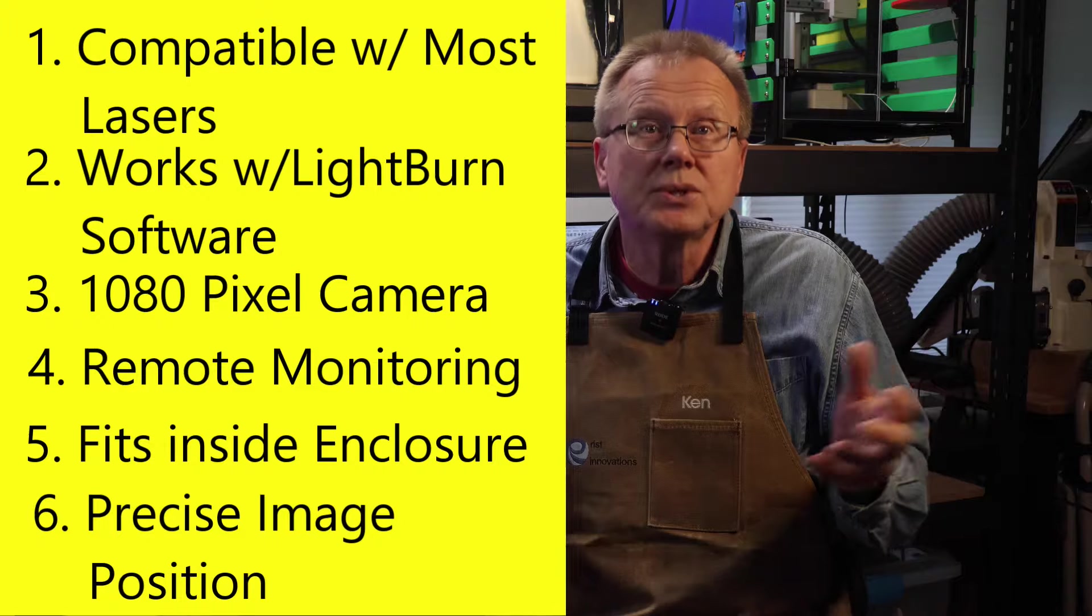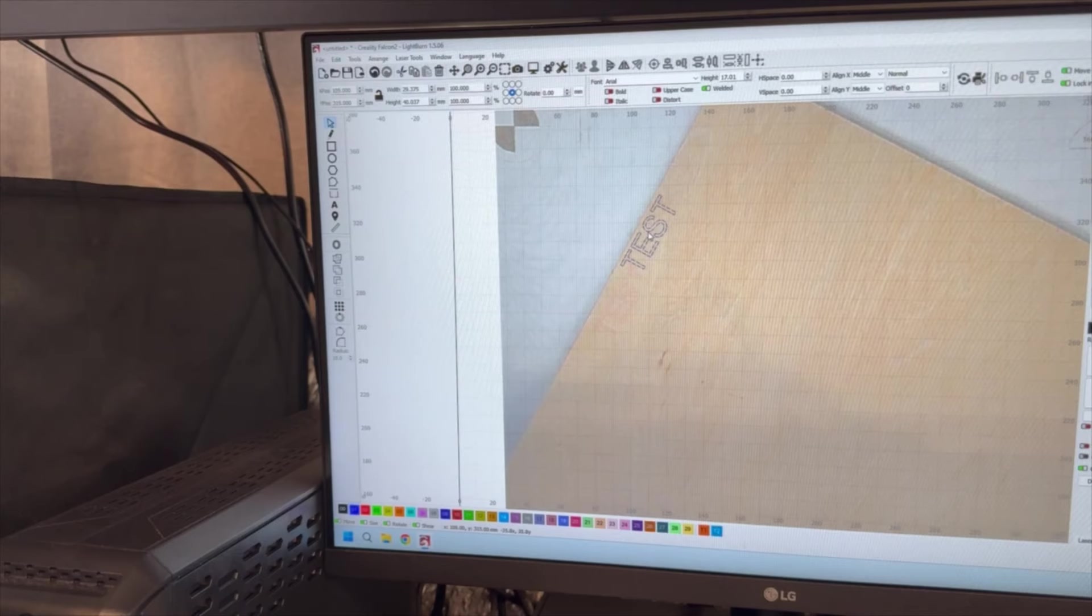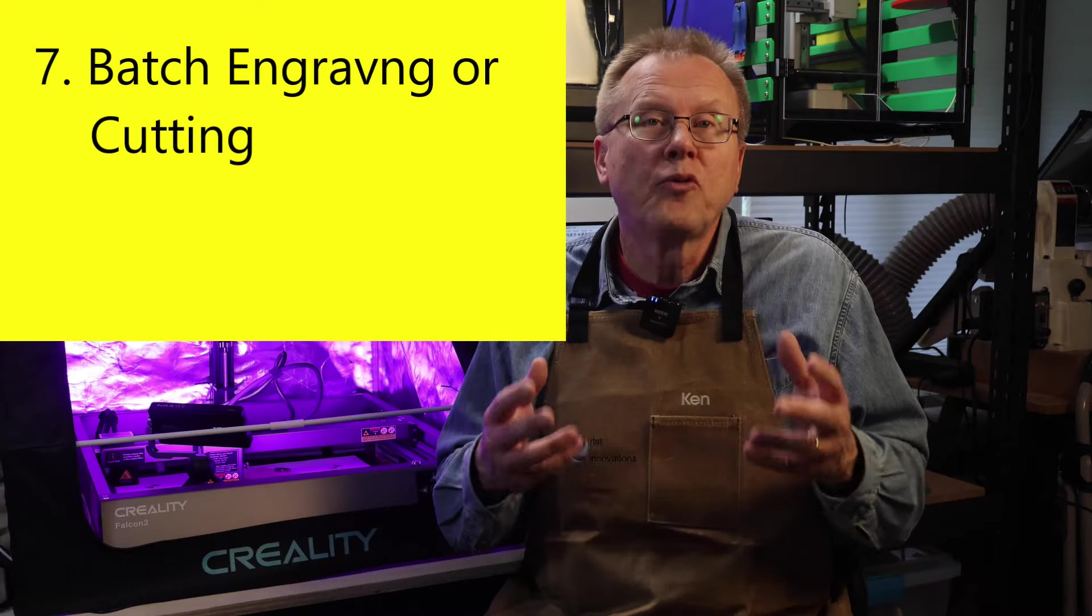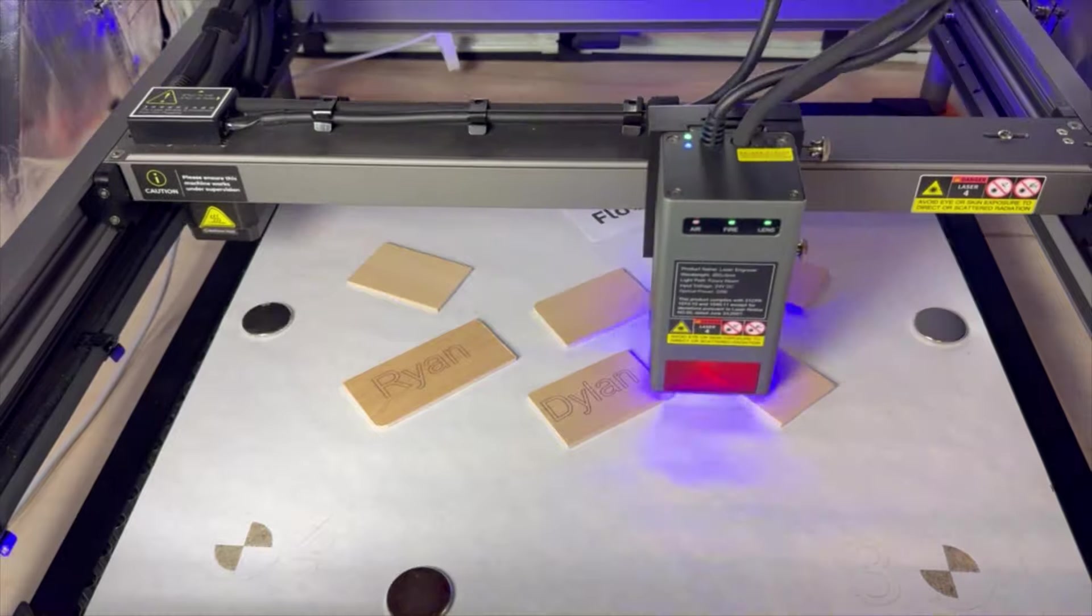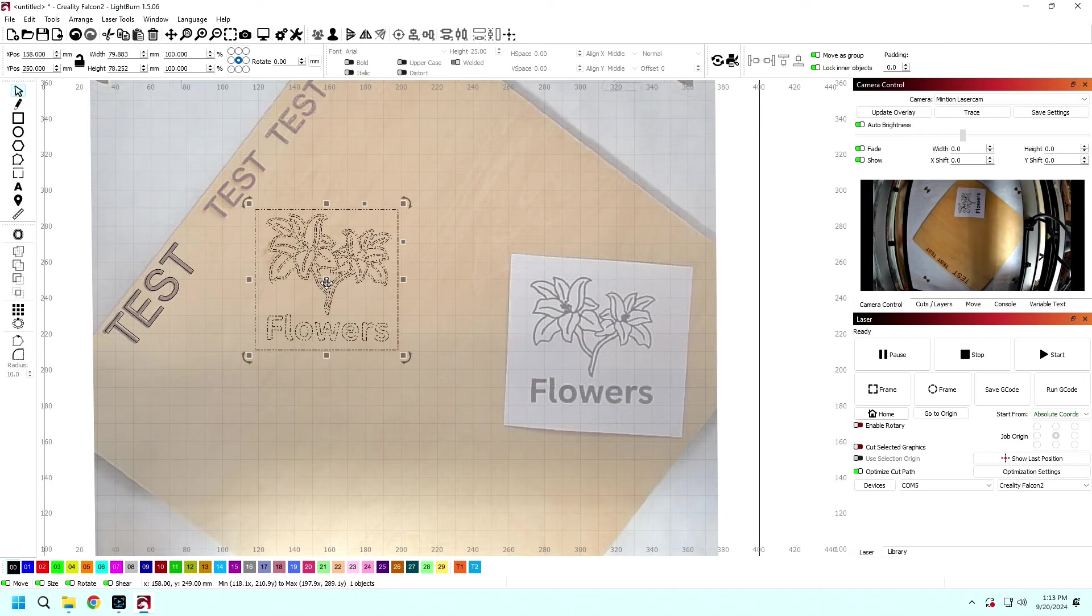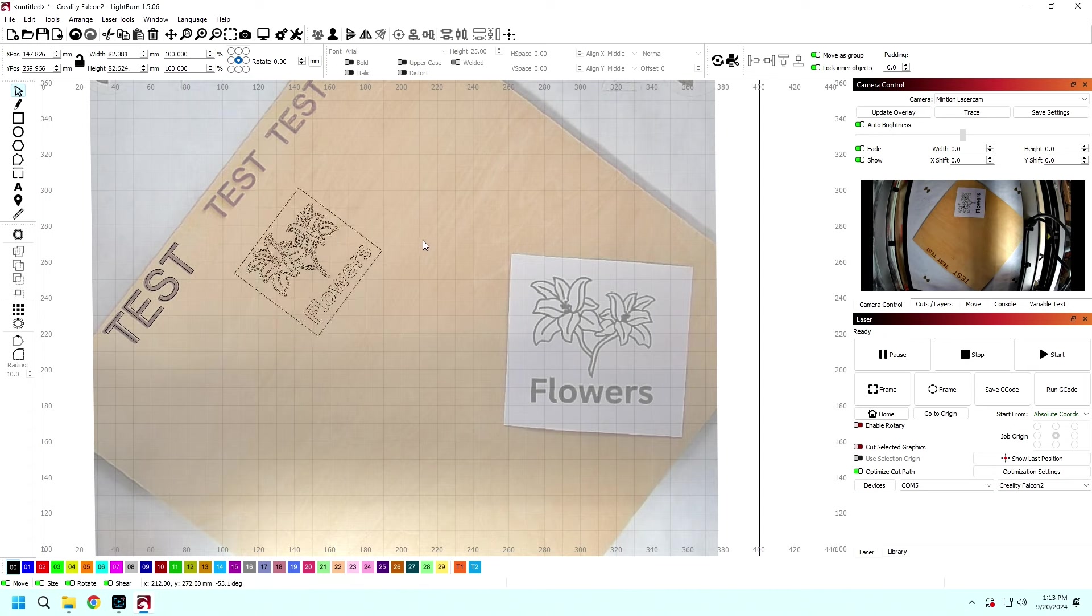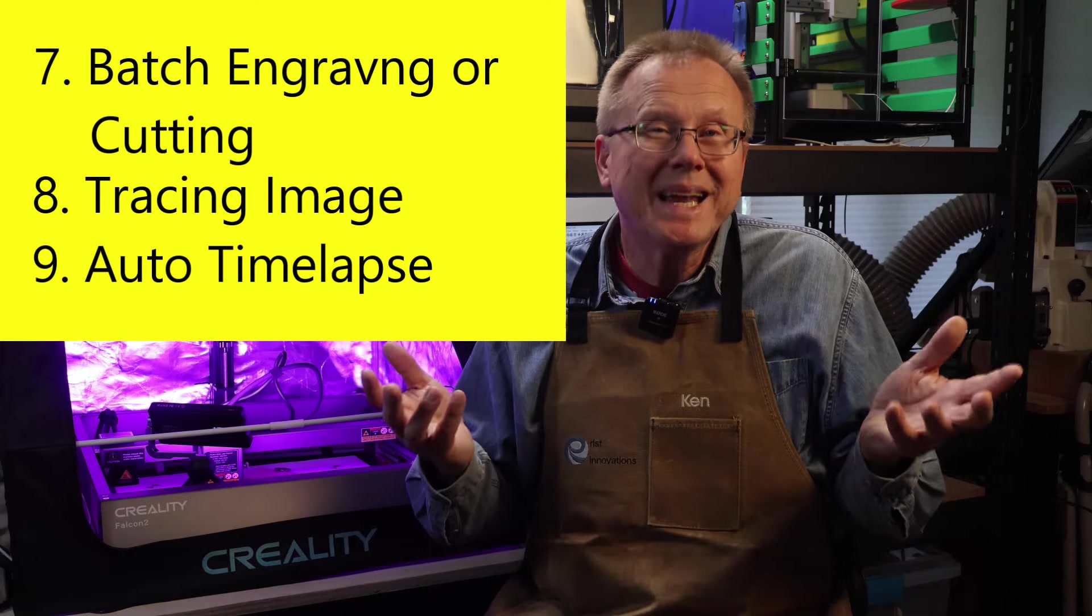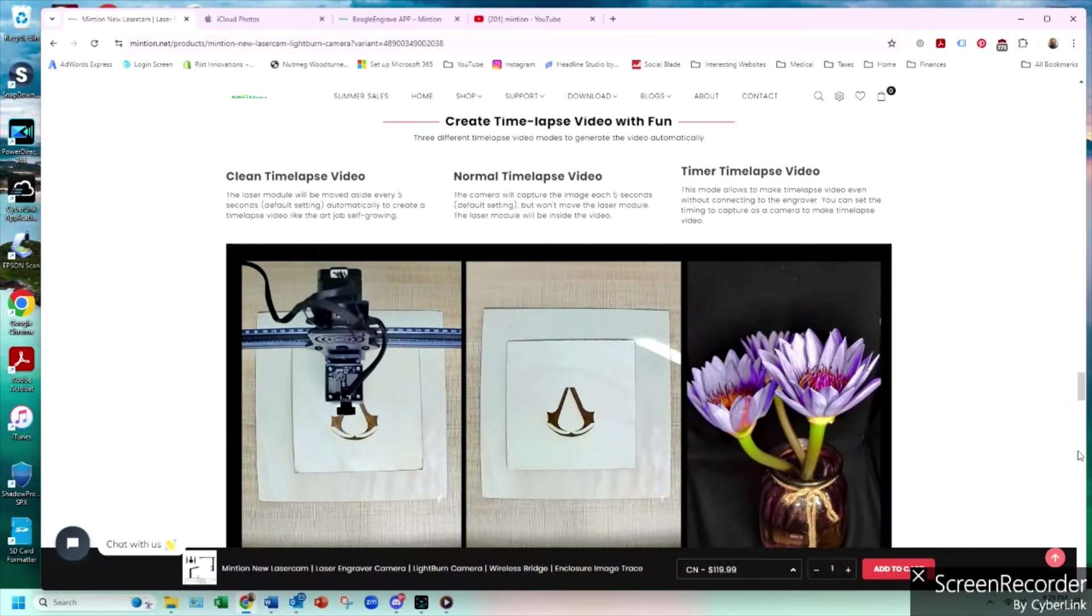Precisely locates your work pieces so you can quickly align your images to cut or engrave. Performs batch engraving or cutting to increase your productivity. The tracing function via Lightburn software allows you to copy a physical object in the work area and paste the image onto your work piece. It comes with automatic time lapses in two modes, normal and clean.